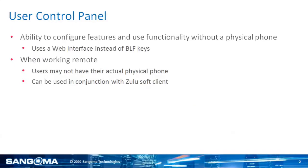So what is the user control panel? The user control panel is the ability to configure features and use functionality without a physical phone. Many times you might not have your actual physical extension, and you might have the ability to access your voicemail or use BLF keys. The user control panel allows you to access a lot of different functions that you normally would have used your BLF keys to access, but because you don't have your phone, you can access those same functions via the web.